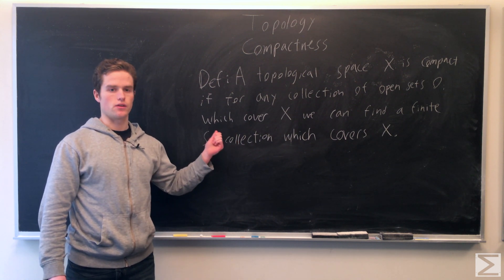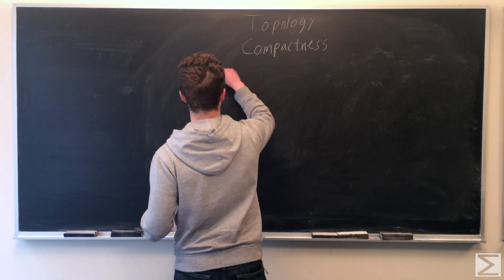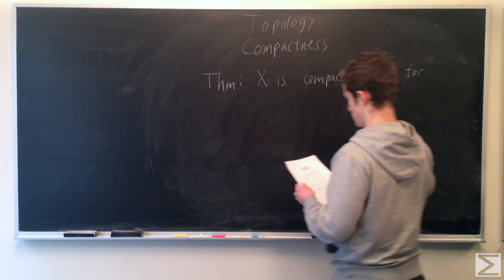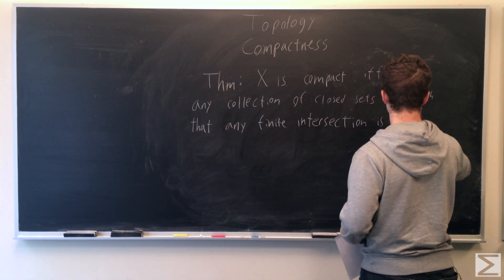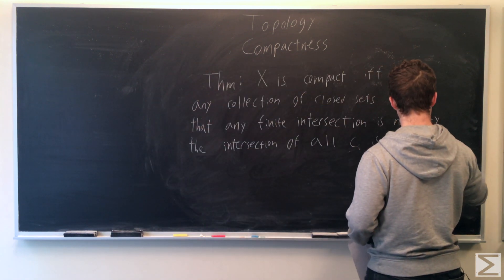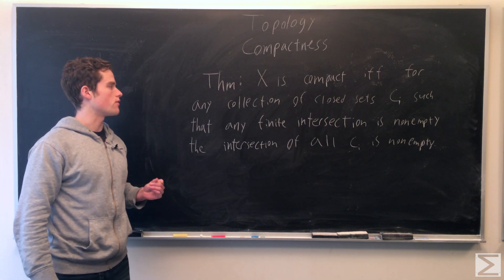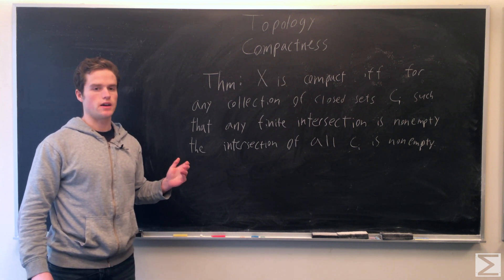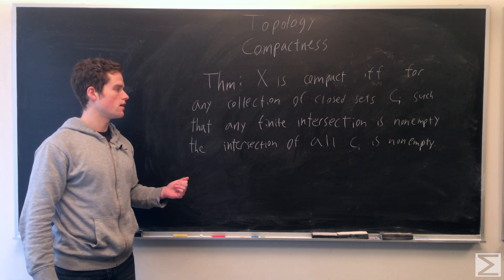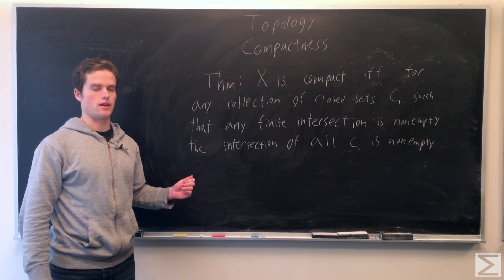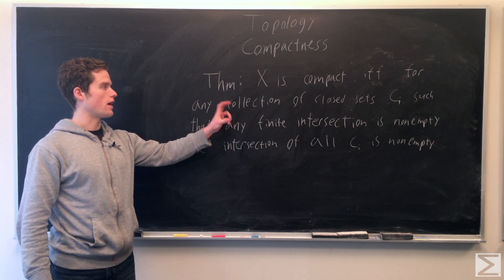We can prove an equivalent condition to compactness. We can show X is compact if and only if for any collection of closed sets Ci in X, such that any finite number of the Ci have non-empty intersection, then the intersection of all the Ci must also be non-empty. If this holds for all such families of closed sets, then X is compact.